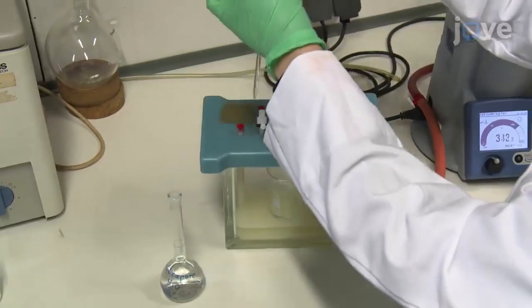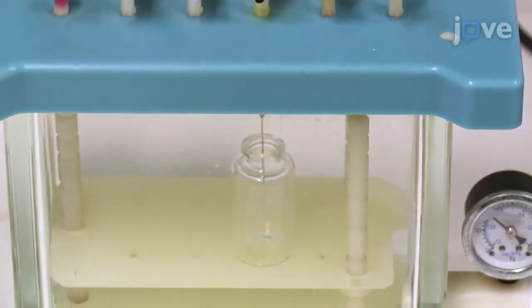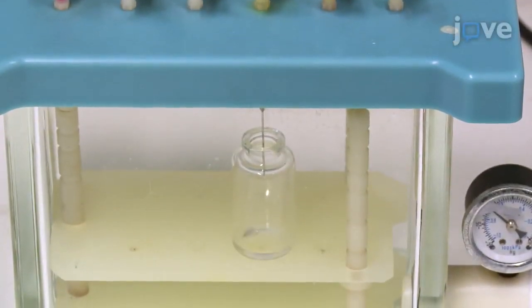Make sure to use a solid phase extraction cartridge with the right solid phase. Wash the sample with three milliliters of ultra-pure water. Then use three milliliters of ethanol to elute the analytes from the cartridge sorbate.